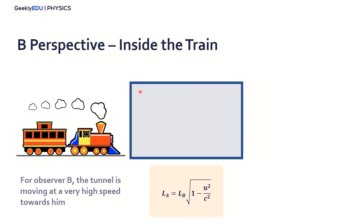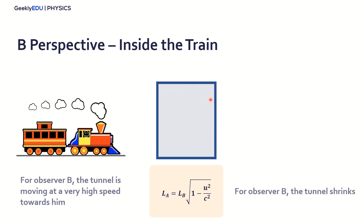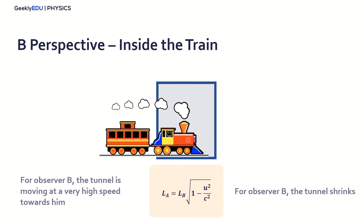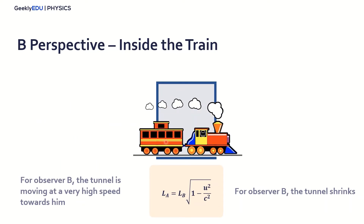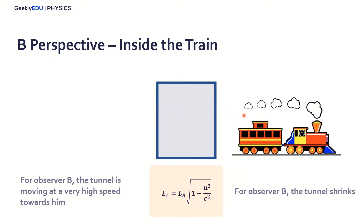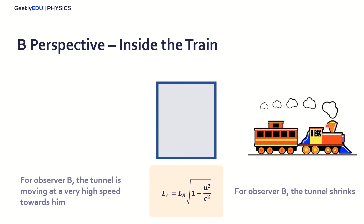Because the tunnel is moving, the tunnel is contracting, is shrinking. So for observer B, the tunnel shrinks. So what we have is something like this: when he passes through the tunnel, he sees the train bigger than the tunnel itself. That's the perspective for B — the tunnel shrinks, not the train.